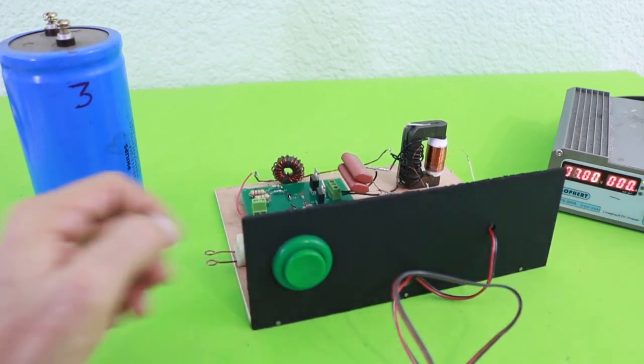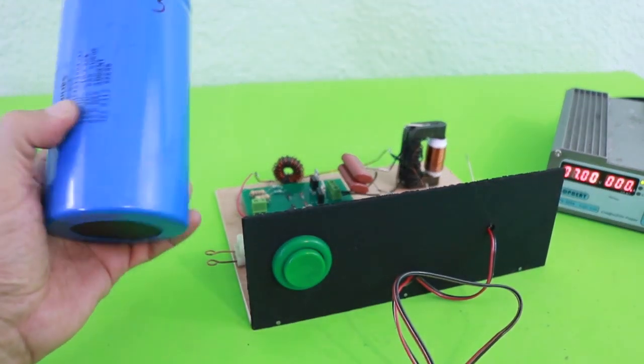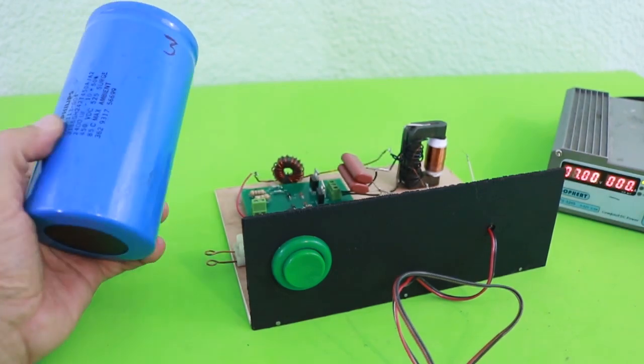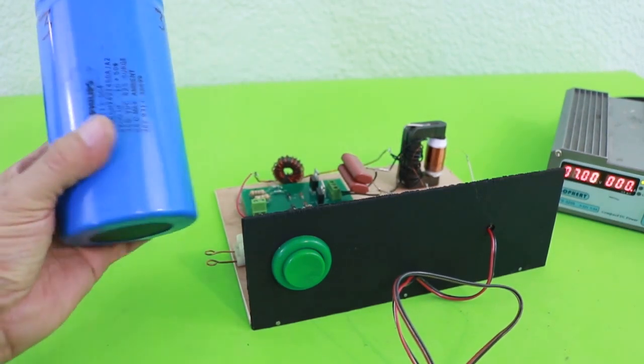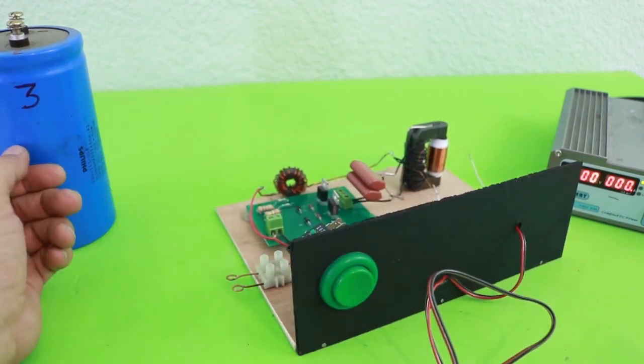We can use this circuit to charge high voltage capacitors such as this one which is 550 volts, but the charger can give you even more than 1000 volts.